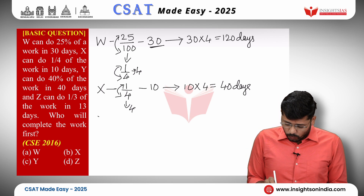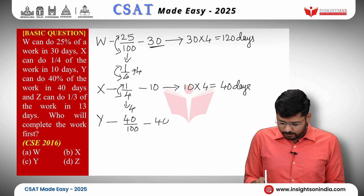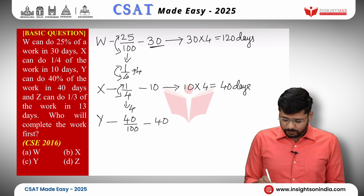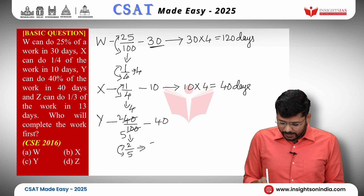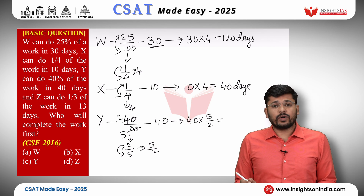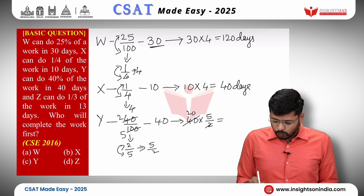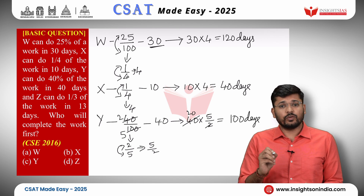Now for Y. Y does 40% of the work in 40 days. 40% is 40/100. We reduce this fraction — both are divisible by 20 — giving 2/5. Inversing 2/5 gives 5/2. Multiplying 40 by 5/2: 40 divided by 2 is 20, and 20 times 5 is 100. So Y takes 100 days to finish the work.